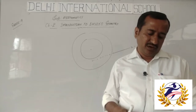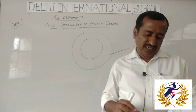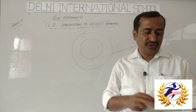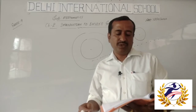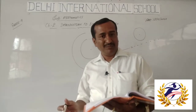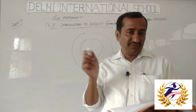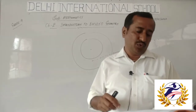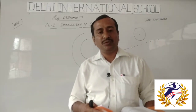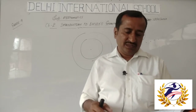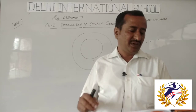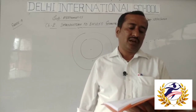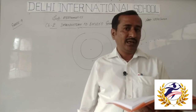The fifth postulate states: if a straight line falling on two distinct straight lines makes the interior angles on the same side together less than two right angles, then the two straight lines, if produced indefinitely, will meet on the side where the sum of the angles is less than two right angles. Refer to the figure on page 33. There is also a theorem: two distinct lines cannot have more than one point in common.